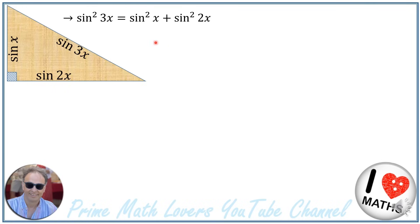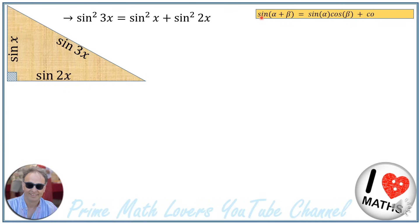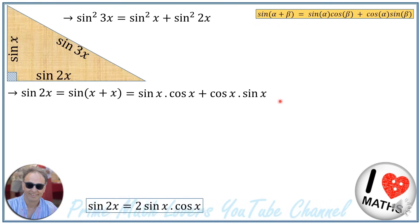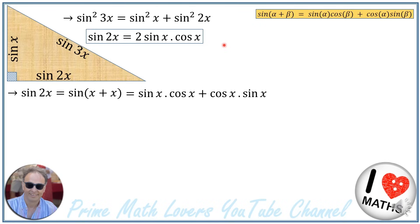We need to calculate sine of 2x and sine of 3x in terms of sine of x. We utilize the trigonometric identity: sine of (alpha + beta) equals sine of alpha times cosine of beta plus cosine of alpha times sine of beta. So sine of 2x equals sine of (x + x), which gives 2 times sine of x times cosine of x.